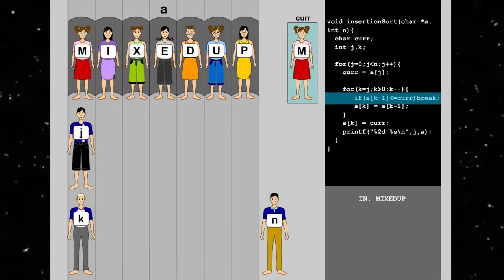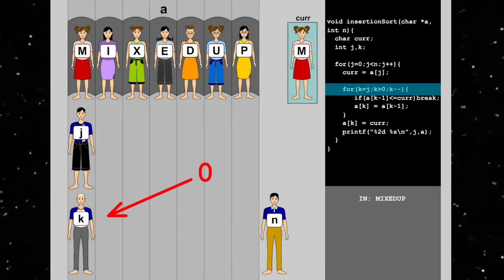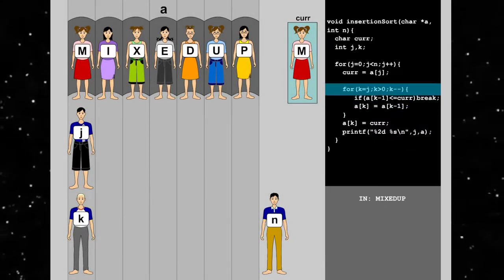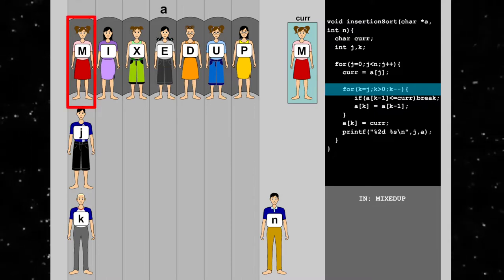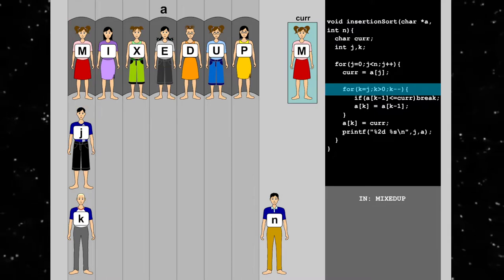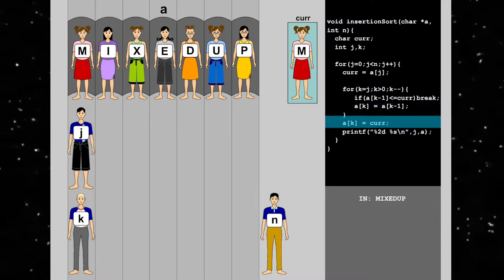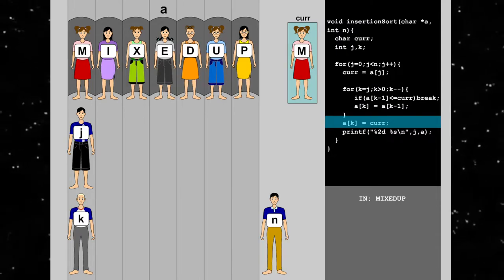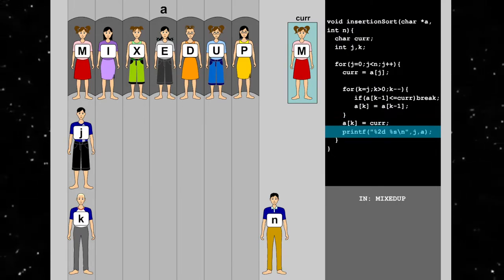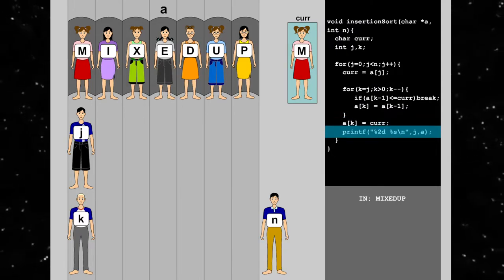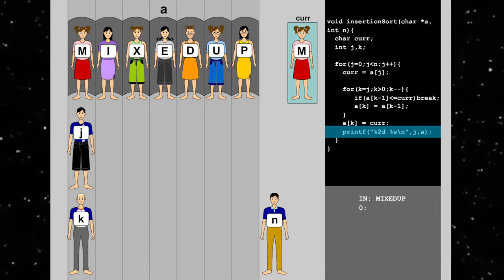Since k is 0, the inner for loop is terminated. In essence, there is only m to insert. Then, we copy the value of car into the current position. We continue to print out the integer held in j and the current value of a.